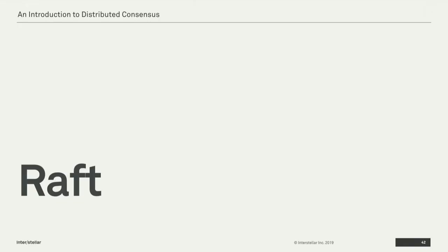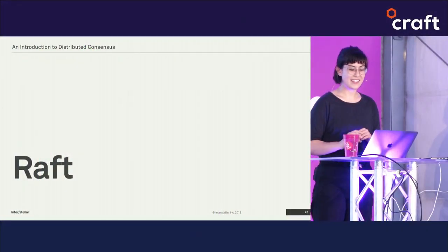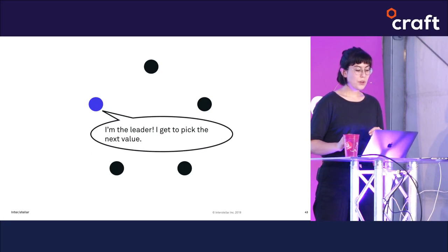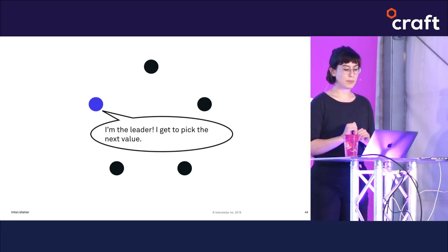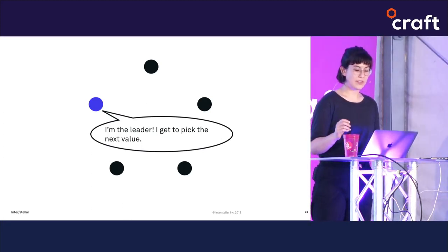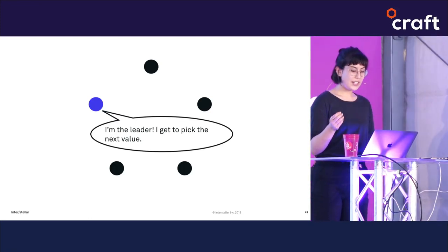Raft is the paper that introduced itself by talking about how complicated Paxos is. It's an important algorithm in its own right — etcd and Consul are two popular systems that use Raft. By talking about Raft we also get to explore a few more interesting ideas from consensus land. Raft tackles the consensus problem by introducing the concept of a leader: a node responsible for updating the state of the system and the only node allowed to pick the next value.